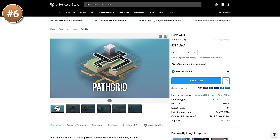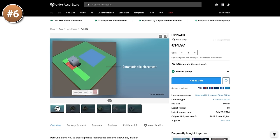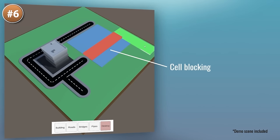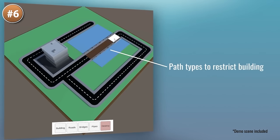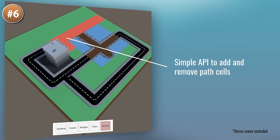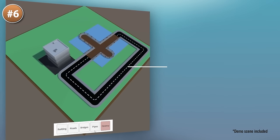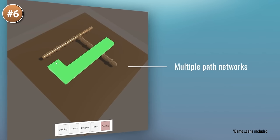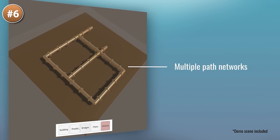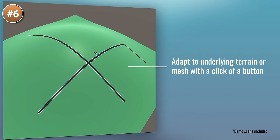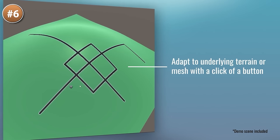If you want to build paths or objects on a grid, check out PathGrid. It helps you build road networks, pipes, or bridges — really any kind of object on top of a grid. The visuals adapt to the mesh underneath, so this works great on top of terrains or other non-flat meshes. This is one of those assets where you could build it yourself — for example, if you follow my GridSystem tutorial videos — but if you just want to save some time, you can simply buy this pre-built asset.